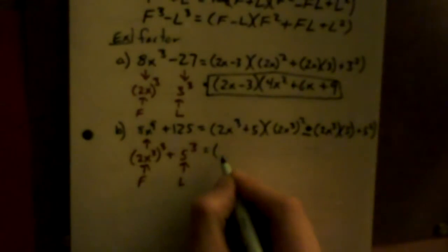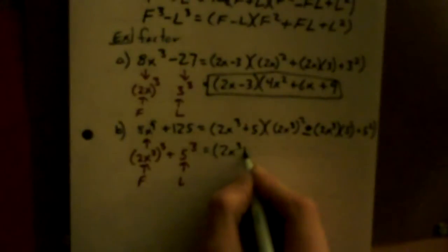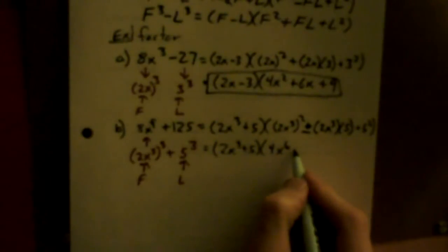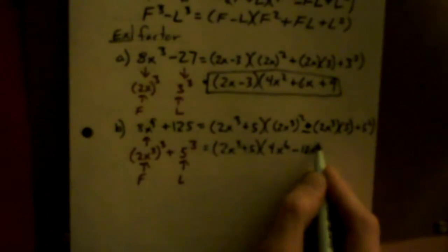So all together here we have (2x³ + 5) times (4x⁶ - 10x³ + 25). Final answer.